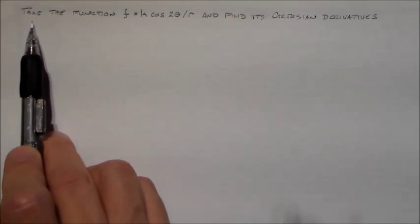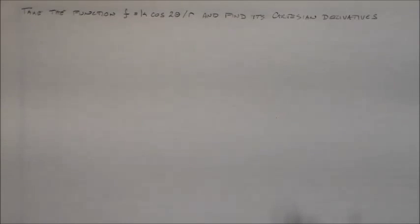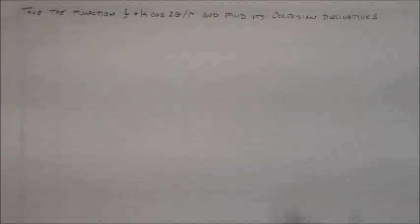Let's see how much fun we can have with this. I want to take the function here in polar coordinates, f equals k cosine 2θ over r, and find its Cartesian derivatives. This is something the book does a lot - there's a whole section on it, and it's really useful. When I was doing things with magnetism, I did this all the time.